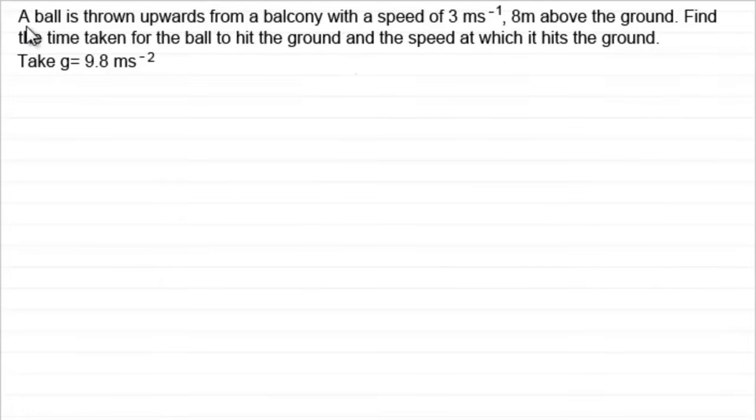And what we've got here is a typical problem where we've got a ball thrown upwards from a balcony with a speed of 3 metres per second, 8 metres above the ground. And what we've got to do is find the time taken for the ball to hit the ground and the speed at which it hits the ground.